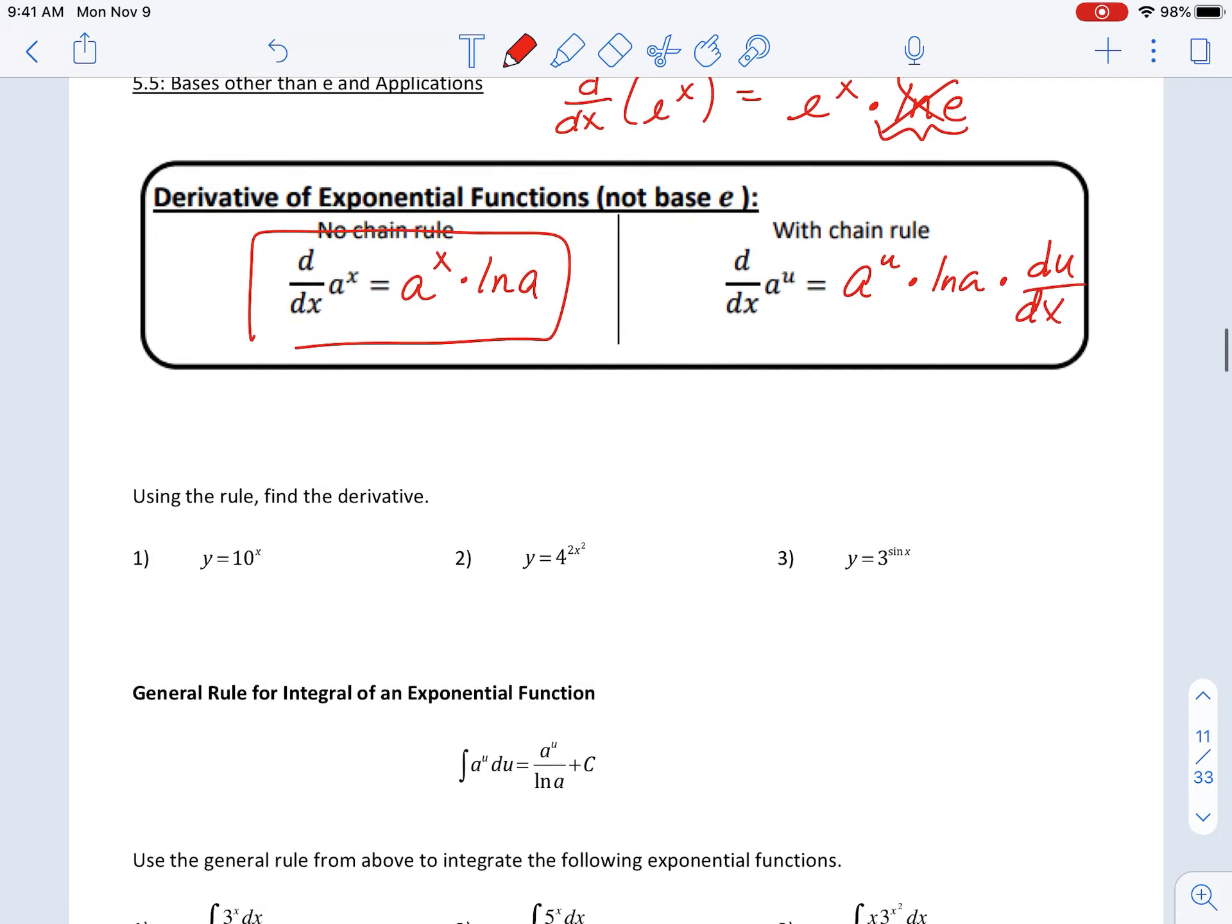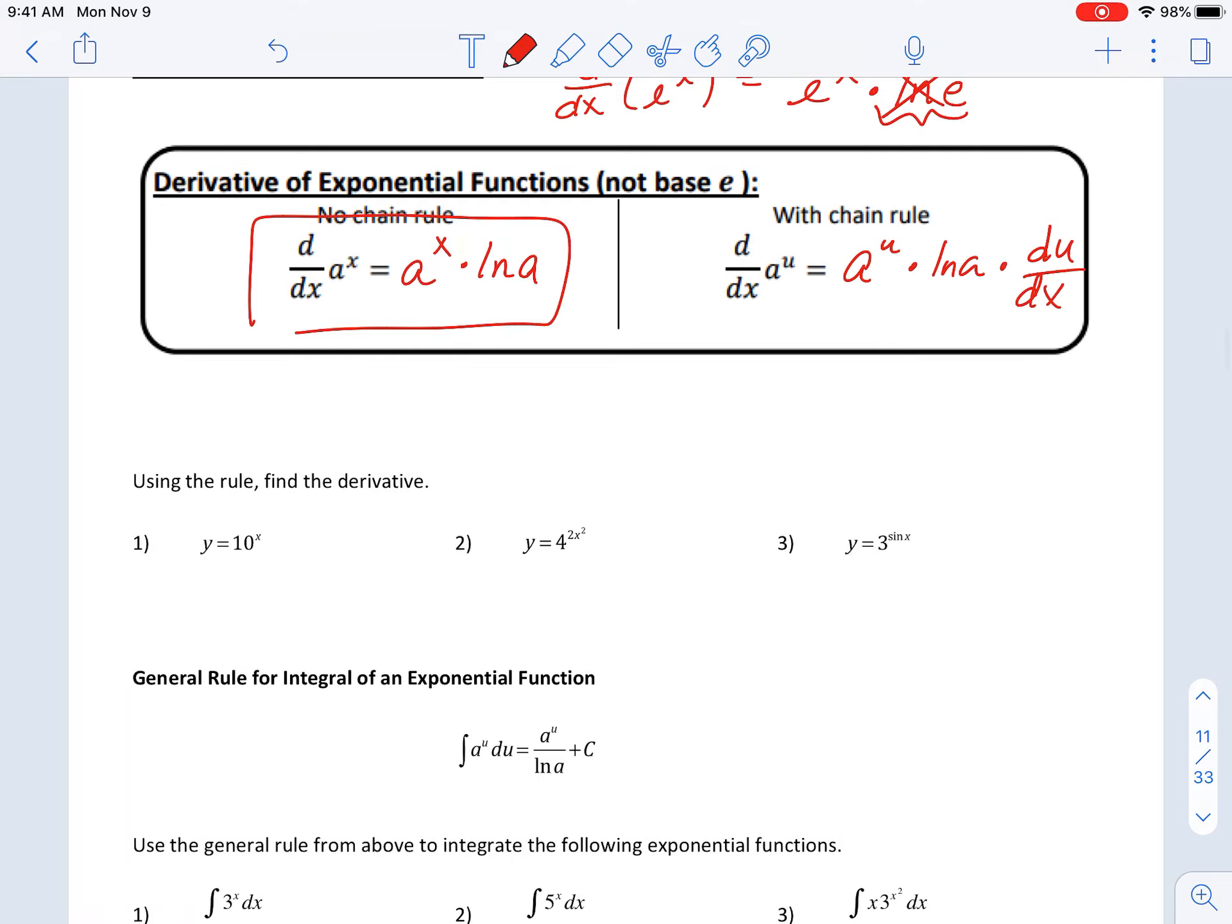Okay, let's practice a couple problems using this rule. So anytime you see an exponential, you should always be thinking derivative, antiderivative is an exponential. So derivative of 10 to the x is 10 to the x times natural log of 10.